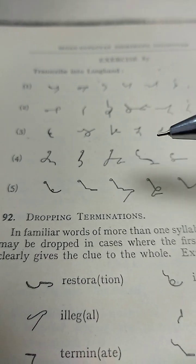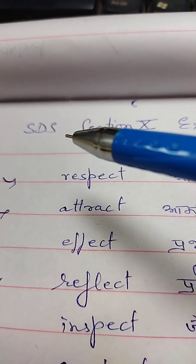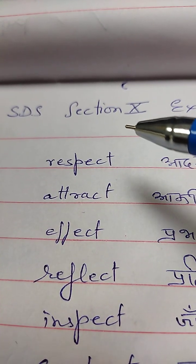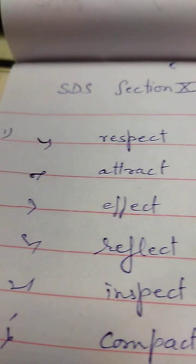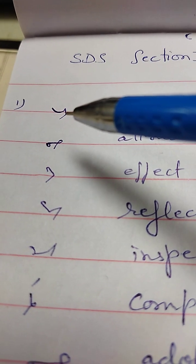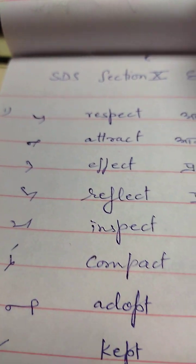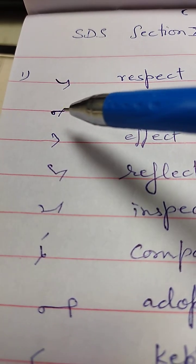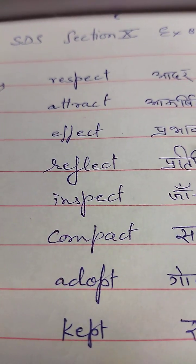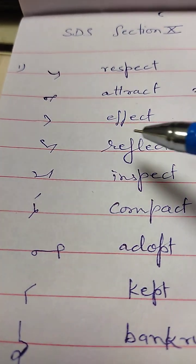So we have to read and write it in our copy. Sloan Dupline Shorthand Section 10, Exercise 87. First one is respect — respect means aadhar. Second is attract — attract means aakarshit karna. Effect.